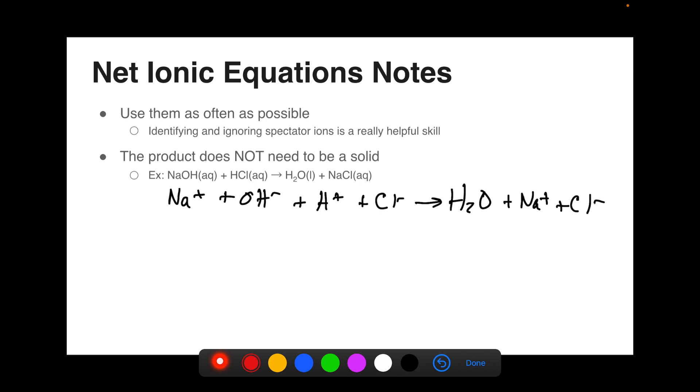Now I'm going to eliminate my spectators, Na plus and Cl minus. I'll be left with OH minus plus H plus yields H2O. This is an example of a net ionic equation where the product is not a solid, it's actually a liquid.